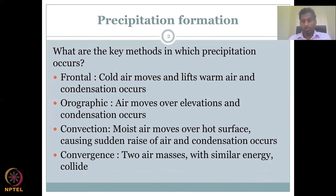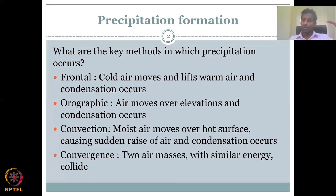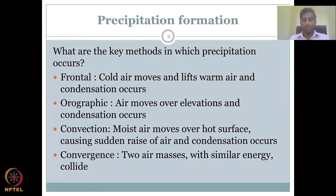Convergence is when two air masses with similar energy collide. In the frontal method, we had cold, denser air and warm air moving. But in convergence, both have similar energy. When they collide, that energy has to be converted — it raises up. If you break it into simple physics, movement is kinetic energy and moving to a higher elevation is potential energy. Kinetic energy is being converted into potential energy by going to a higher elevation. However, when you go to a higher elevation, it cools down — and that cooling is the important process needed for condensation to occur.